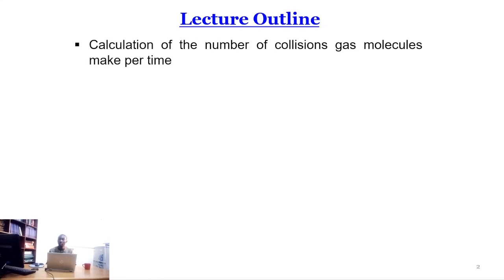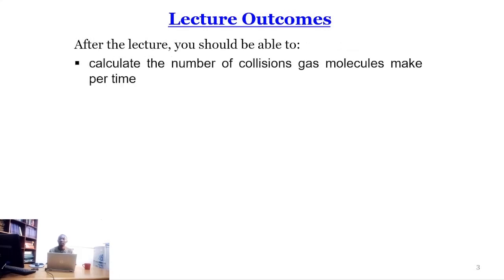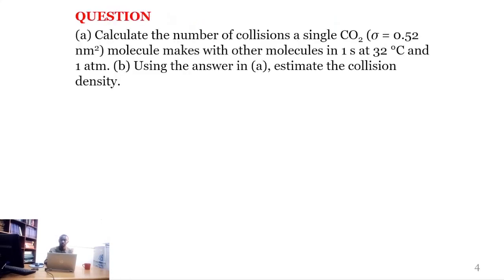Today's lecture is about molecular collisions. We will be calculating the number of collisions gas molecules make per unit time. After the lecture, you should be able to calculate that. The question asks: calculate the number of collisions a single CO₂ molecule makes with other molecules in one second at 32°C and a pressure of 1 atm. Part B asks us to use the answer from Part A to estimate the collision density — that is, the total number of collisions within a given volume.